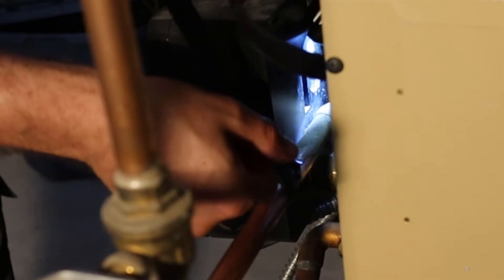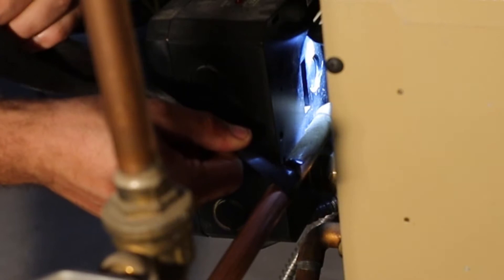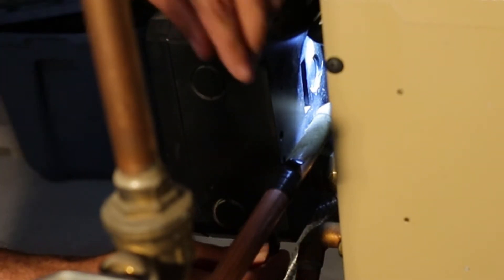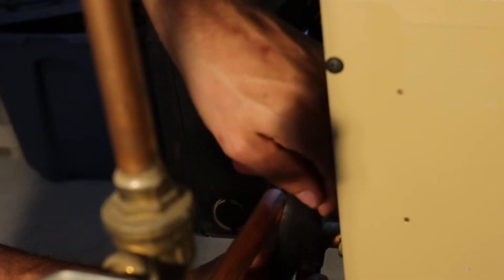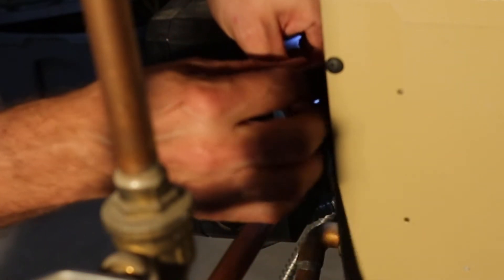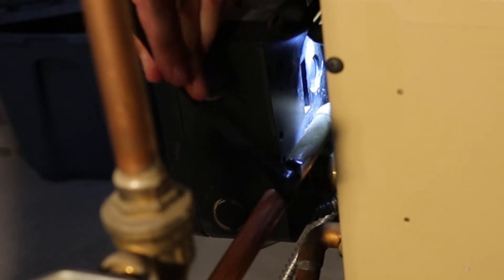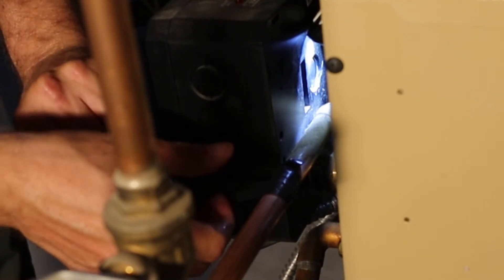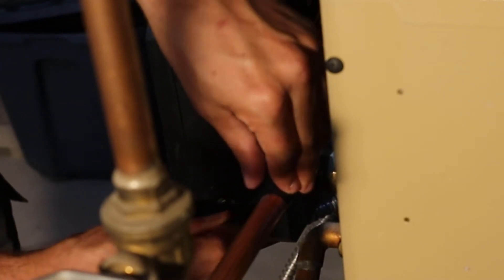And we'll just keep working around the pipe until I run out of tape. Now one thing you can see probably is that the leak is still kind of active as I wrap this around. But we're also according to the instructions supposed to be able to apply this wet. So hopefully that won't be an issue.